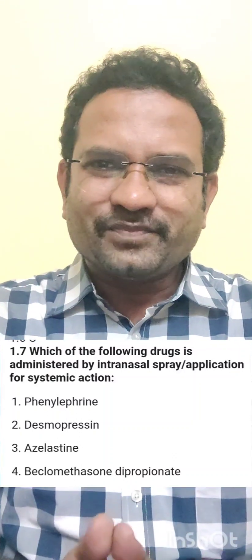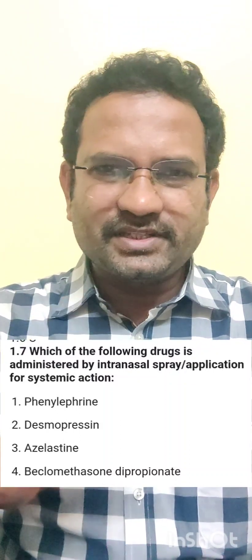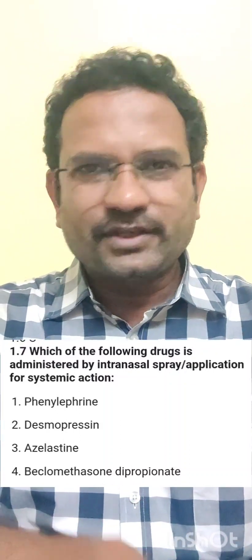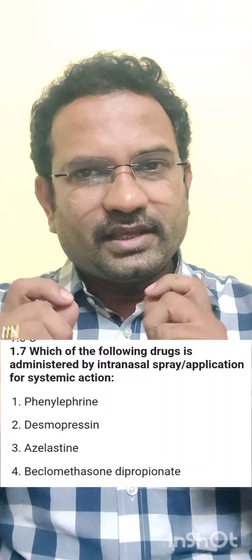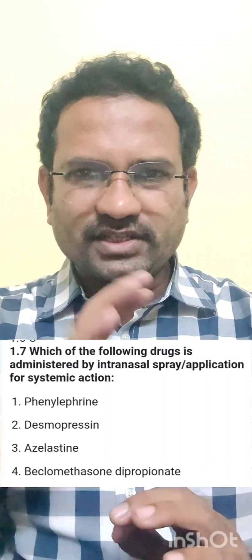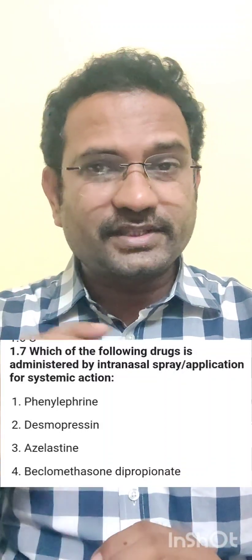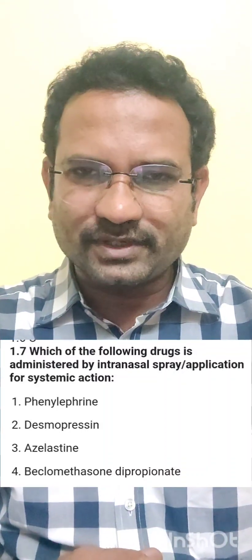Now understand the question. See, all the options can be administered through nasal spray — that is the reason why you need to read the question carefully. The question has got two parts: find out a drug which is given through nasal spray for systemic action. Local application means wherever you apply the drug, the effect will be restricted to that local area. Systemic application means it gets into your systemic circulation. So the question asks for a nasal spray which has got systemic action.